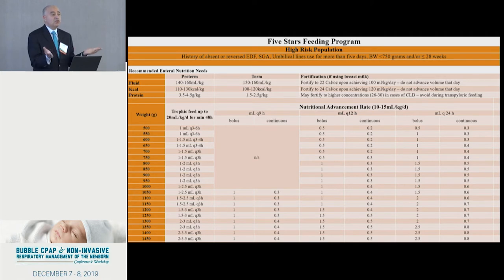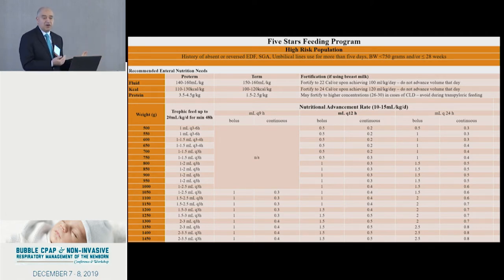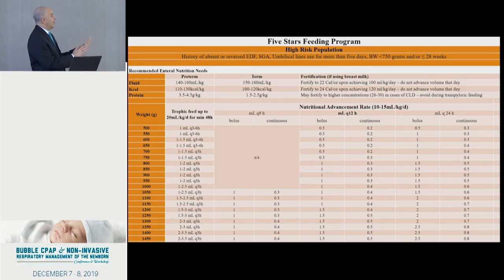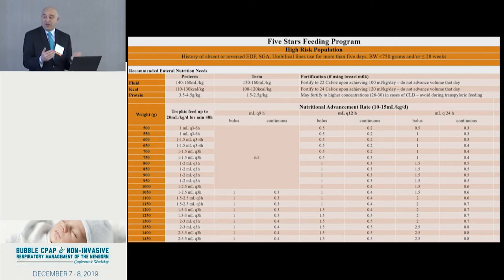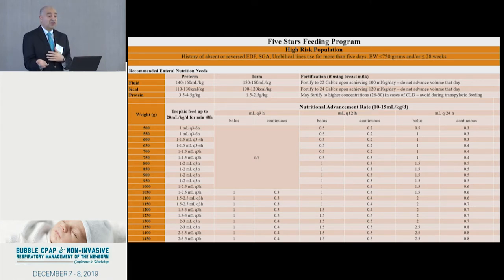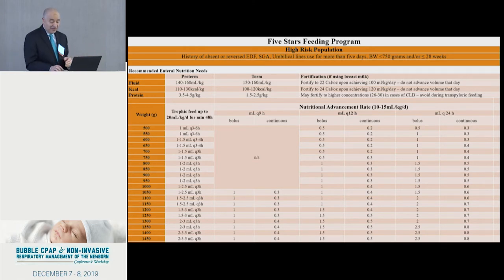We have a protocol for every 50-gram increment — how to start, how to advance gradually. It's homemade and we are publishing our outcomes in reducing NEC next year. You can borrow it or make your own — there is no magic about it. The whole idea is that all the attendings sat down, made this, and agreed to stick to it. Whatever you come up with, be sure that everyone is buying in and no one will do something very different the next morning. Be consistent and agree on it as a team.